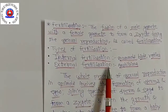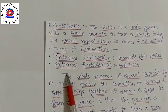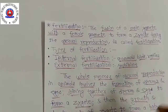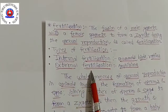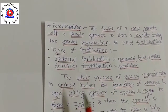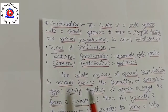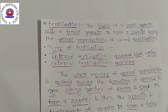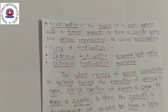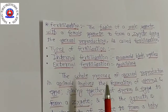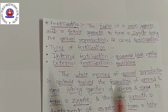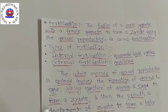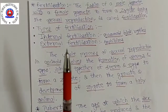External fertilization is when the fertilization occurs outside the female body. The female animal's eggs are fertilized by sperm outside the female body. In amphibians like frogs and toads, and in fishes, the fertilization of eggs occurs outside the female animal's body.